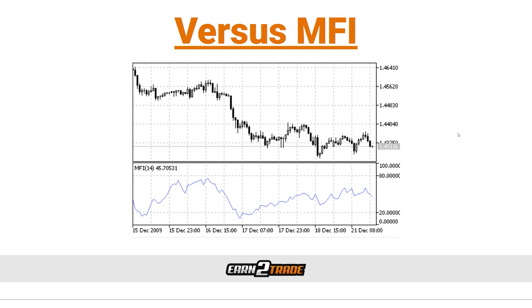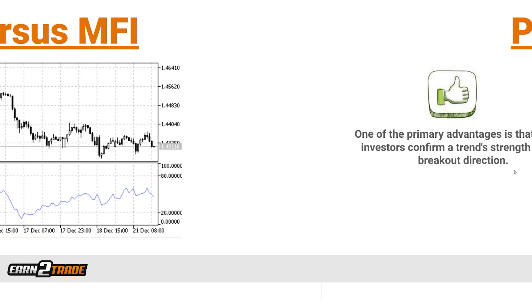Another indicator that often gets compared with the CMF oscillator is the Money Flow Index (MFI). The MFI is a momentum indicator that gauges the flow of money into and out of a security; however, it is significantly different from the CMF in practical use because it utilizes volume and recent price action to measure momentum. In many respects it resembles the Relative Strength Index (RSI). Key levels to observe on the MFI are 80 and 20: if the index is higher than 80, it typically suggests the market is overbought and a drawdown could be expected. Conversely, if an MFI reading falls below 20, it indicates the market is oversold and a rebound might be likely.